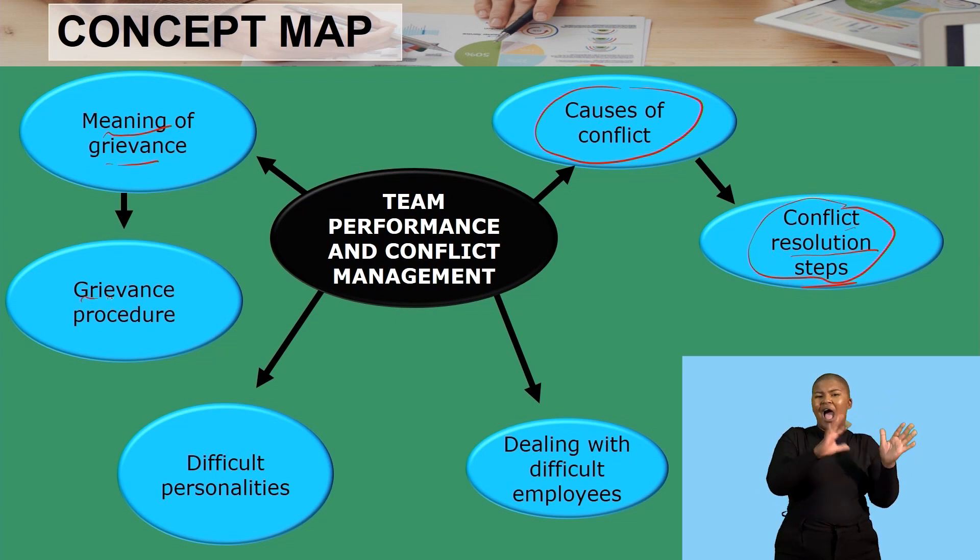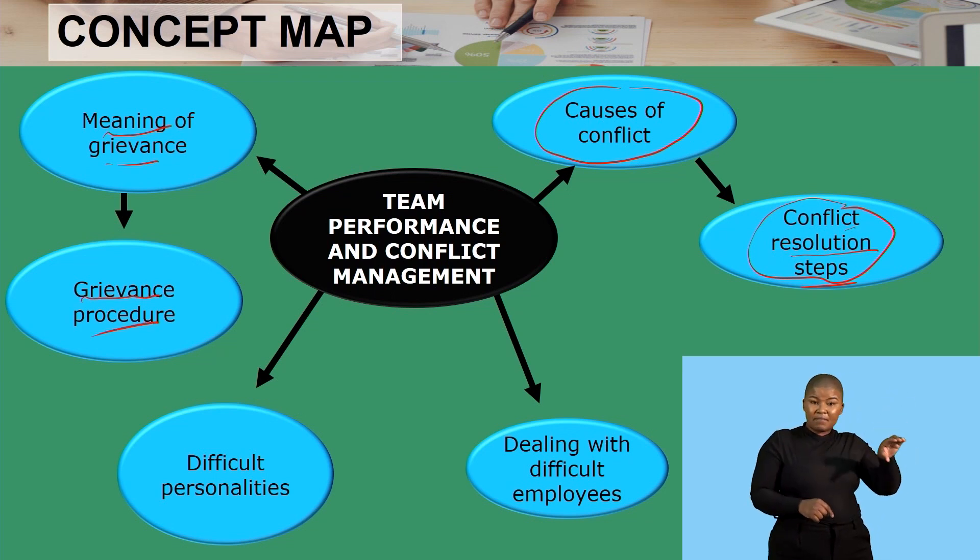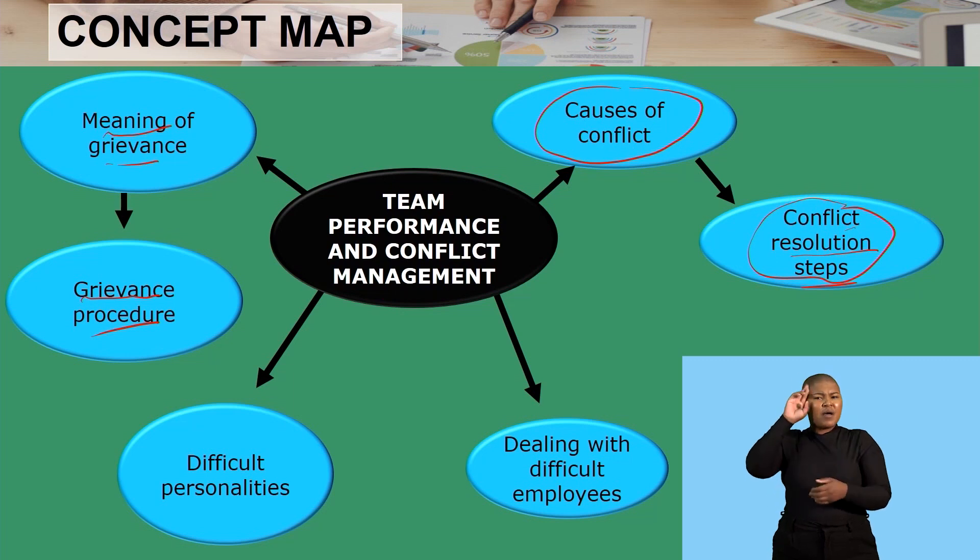We talked about the grievance procedure, which included reporting to the supervisor verbally and trying to get the issue solved within three to five days. If it is not solved, you move to the next level of management, then to top management as the last internal step. If the organization fails to resolve it, you move to the CCMA, and if the CCMA also fails, you appeal their decision via the labor court.